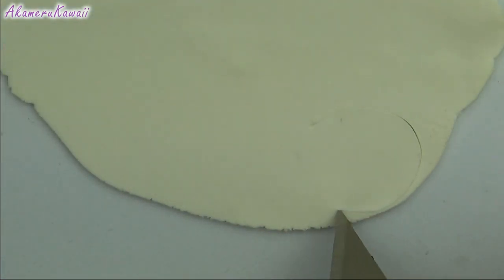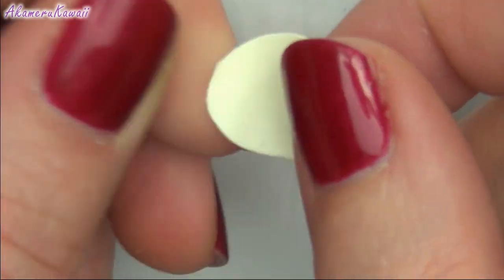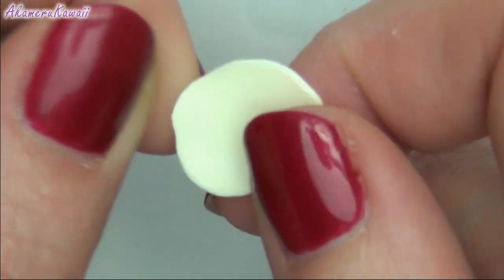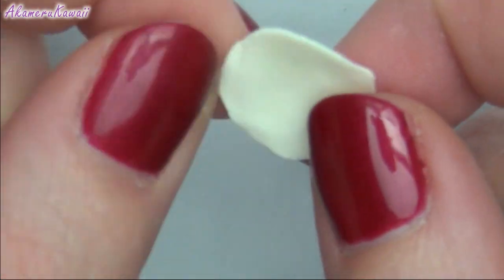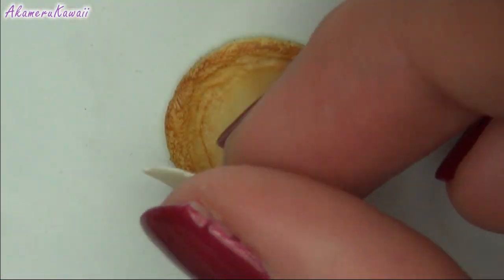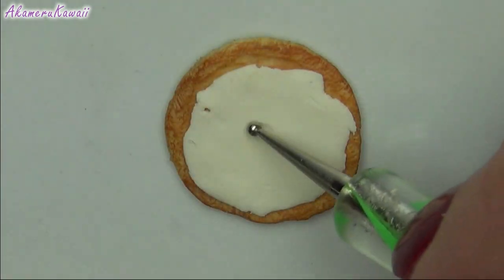Roll out a light yellow and cut a smaller circle and thin out the edges with your fingers. Apply it to the center of the pizza and use dotting tools to add texture.